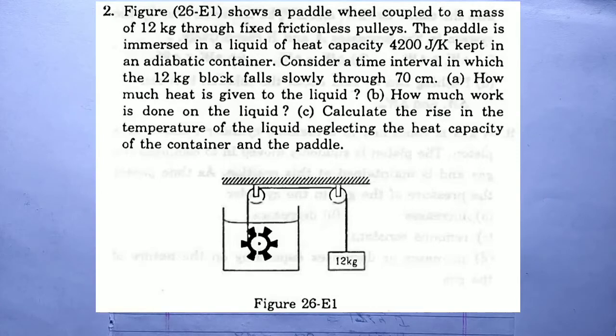Figure shows a paddle wheel coupled to a mass of 12 kg through a fixed frictionless pulley. The paddle is immersed in a liquid of heat capacity 4200 J/K kept in an adiabatic container. Consider the time interval in which the 12 kg block falls slowly through 70 cm.